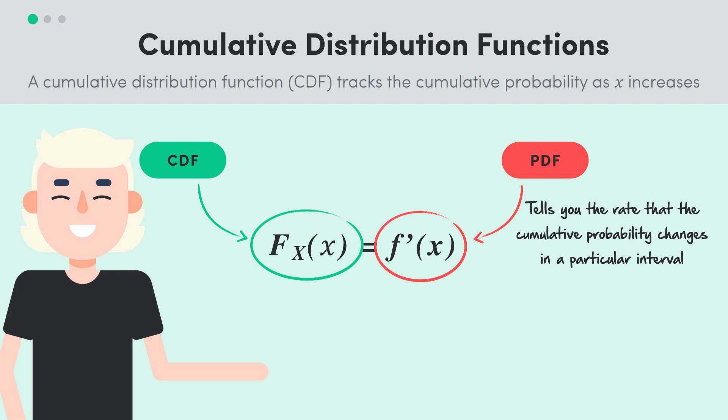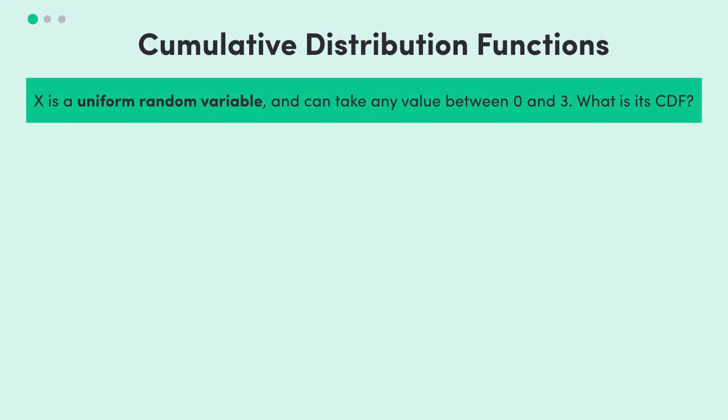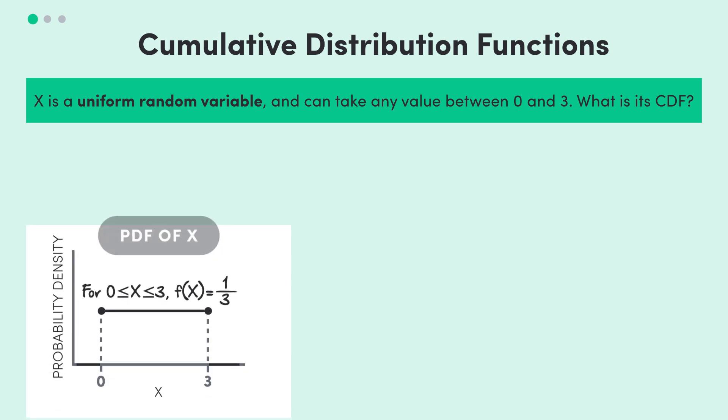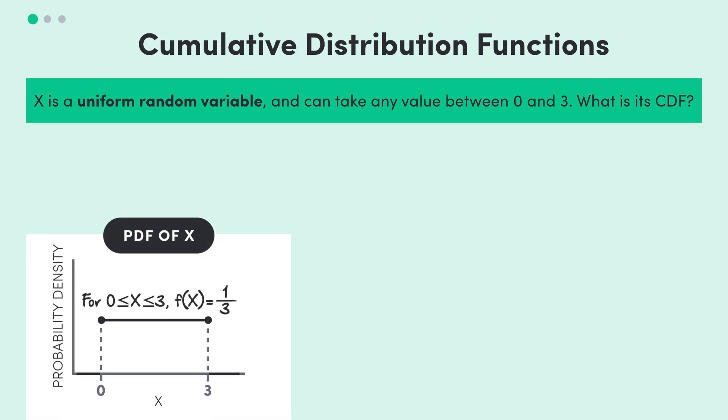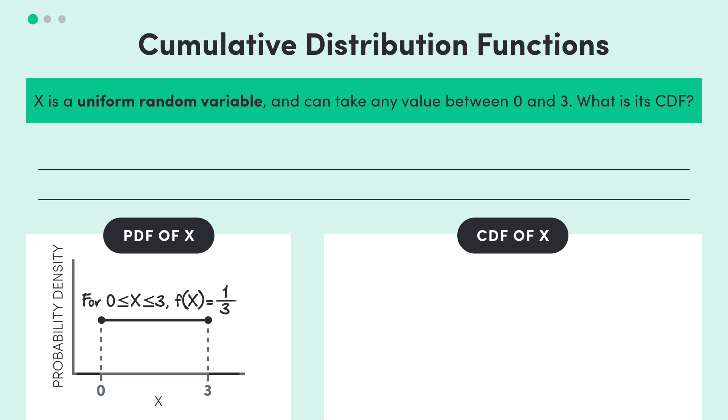So let's actually see an example of a cumulative distribution function. Let's say that x is a uniform 0, 3 random variable, so x is equally likely to take any continuous value between 0 and 3. Now a uniform 0, 3 random variable has this PDF. So what is the CDF? Let's focus in on this rectangular area, so between 0 and 3.